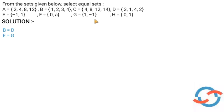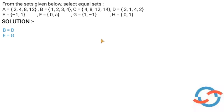G is equal to 0. H is equal to 0. F is equal to 1. G is equal to 1. 1 is equal to 1. Then minus 1 is equal to 0. So G is equal to 1. Hence our answer is equal to 1.